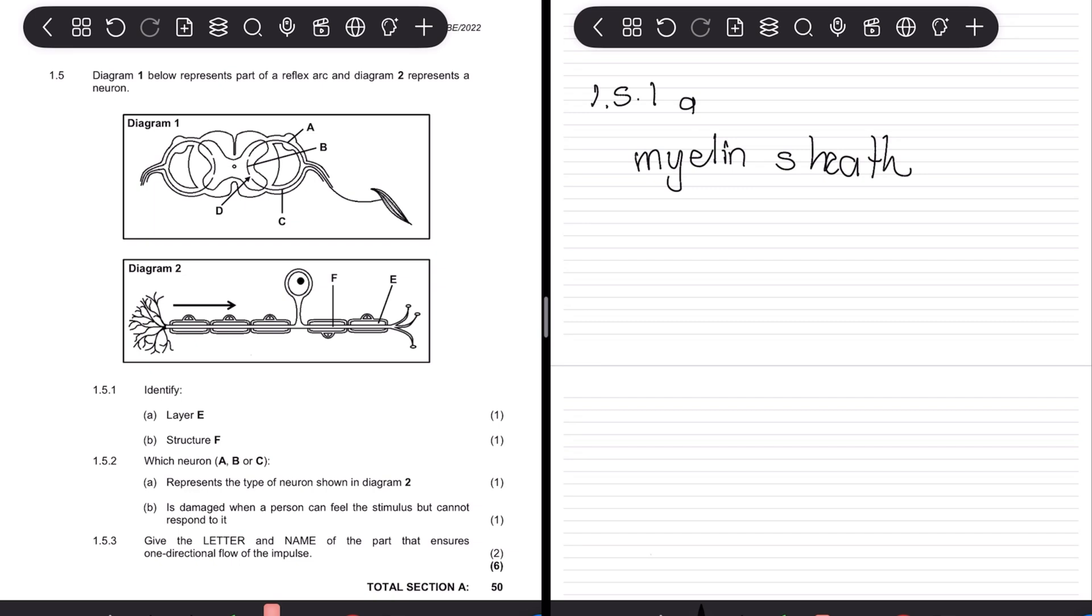All right, next one is B. Structure F. So structure F is like the little thing that runs all the way through until the tree-like structures. So if you think about it, what is the thing that is connecting or the impulse is kind of running, like connecting? Obviously we understand that the myelin sheath insulates, but that structure F would then be our axon. So for B, that will now be our axon.